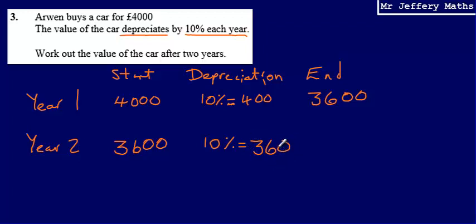What we're then going to need to do is reduce our £3,600 by £360. That's going to leave us with £3,240. So our final answer is £3,240.